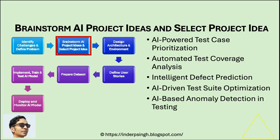AI-powered test case prioritization: use machine learning to rank test cases based on their likelihood to detect critical bugs. Automated test coverage analysis: an AI system that automatically analyzes code to identify areas not covered by existing tests and suggests new test cases to increase test coverage.